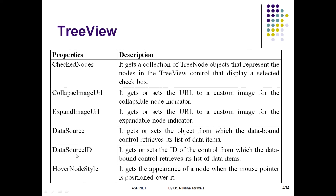Another property is DataSource. The DataSource property specifies the object from which the data-bound control retrieves its list of data items. If we set data directly, we use the DataSource property. But if we use a data source control, we set the control ID in the DataSourceID property. These are two different things — DataSource is used when we use records directly, and DataSourceID is used when we specify a data source control.